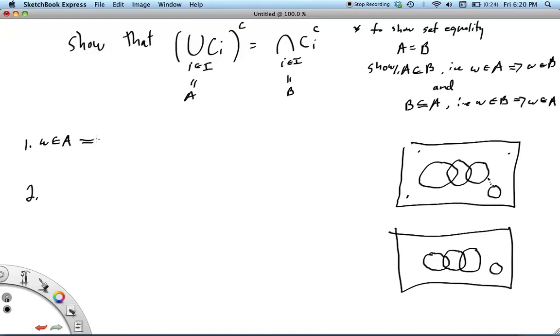So what does it mean if we know that omega is in A? Well, it means that, well, what can we say about a point such as this in relation to each of the sets? Well, we can certainly say that omega is not in any one of the sets. So what we can say is that for all C-I, omega is in the complement of C-I.